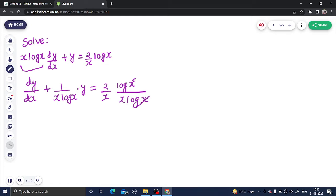Log x will get cancelled, you will get 2 by x square. So dy/dx plus 1 upon x log x into y equals 2 by x square. Fine.